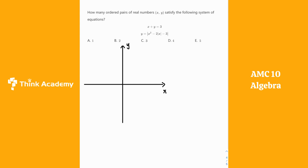Let's take a look at this MC10 sample problem on algebra. We want to find how many ordered pairs of real numbers x and y satisfy the following system of equations. For a system of equations, usually if you want to find the solutions, you have to put these two equations together and use substitution or other methods to find solutions that satisfy both equations.